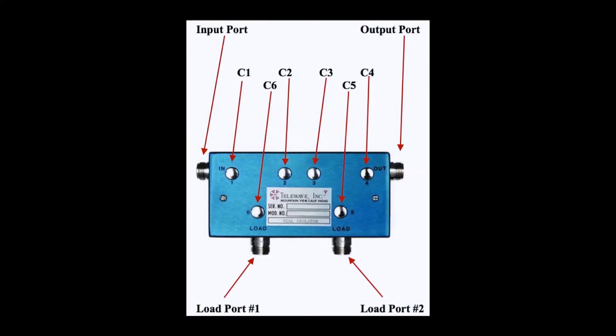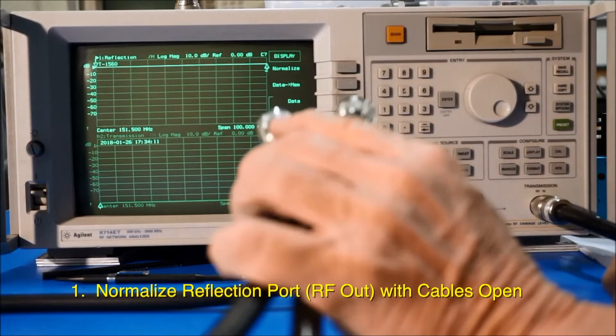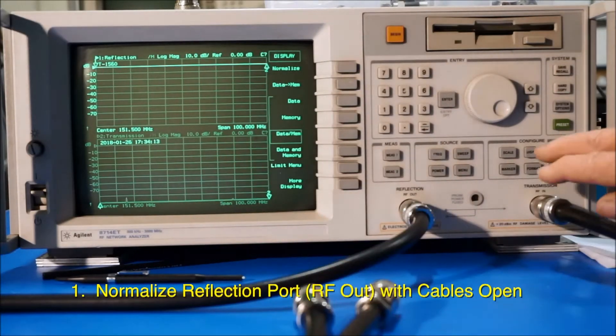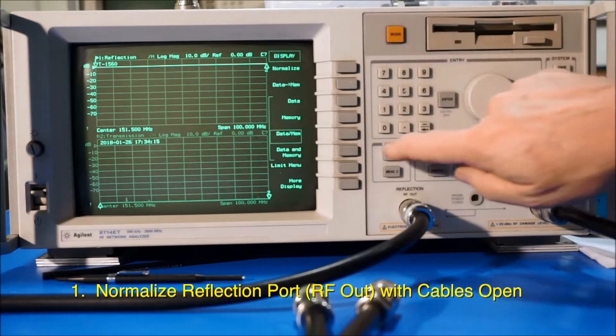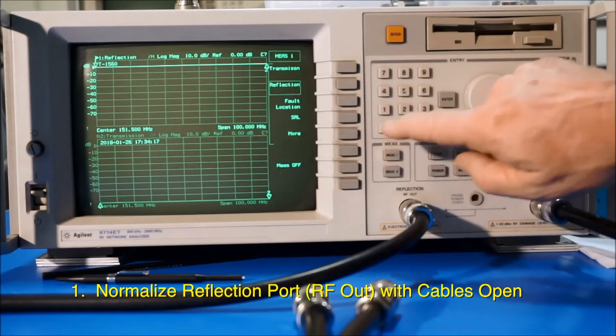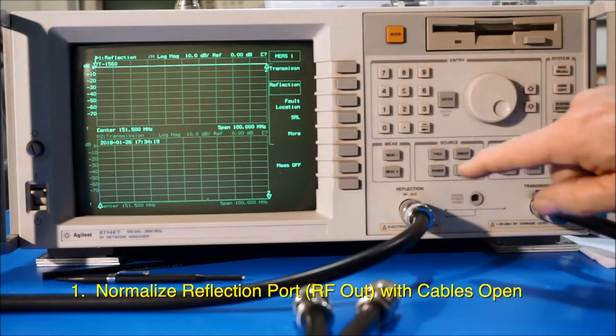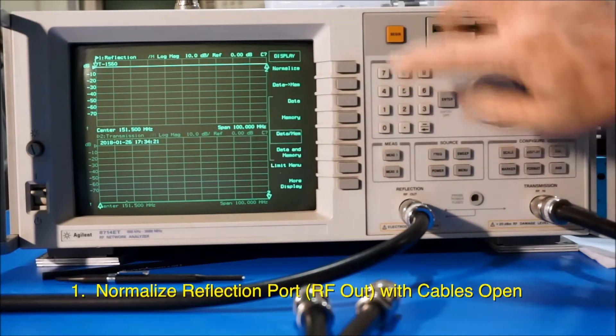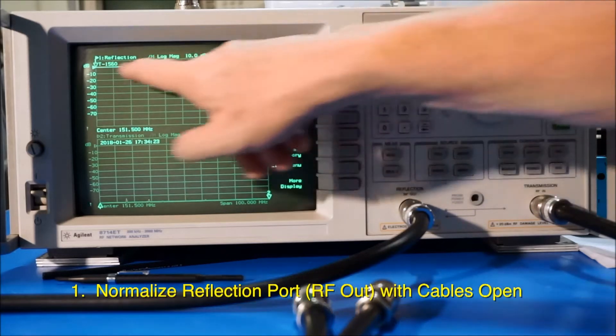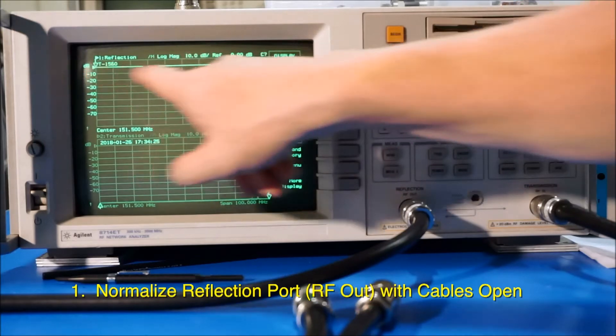This video is about checking and adjusting the tuning on a Telewave isolator. I've got these cables disconnected and I've hit display here. We're on measure one, looking at reflection. So I hit display, normalize, and that normalizes it across here.